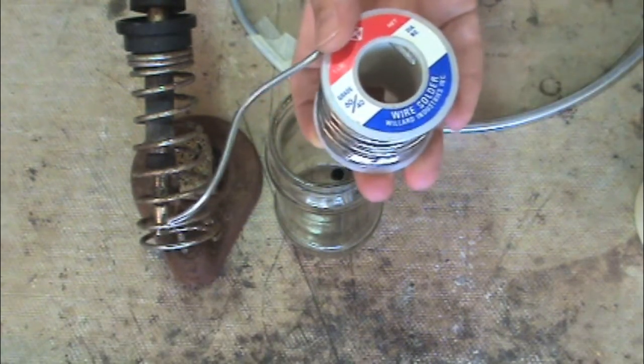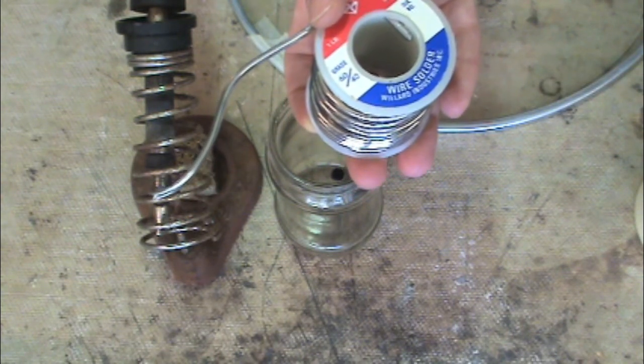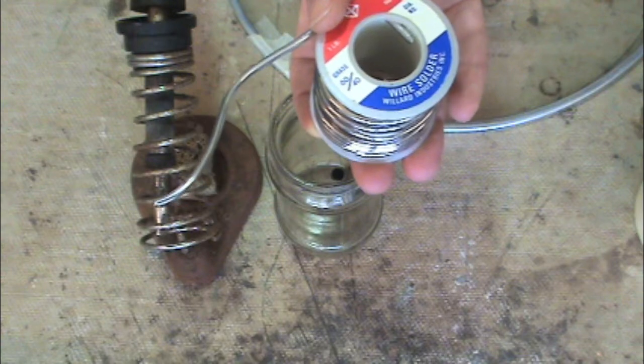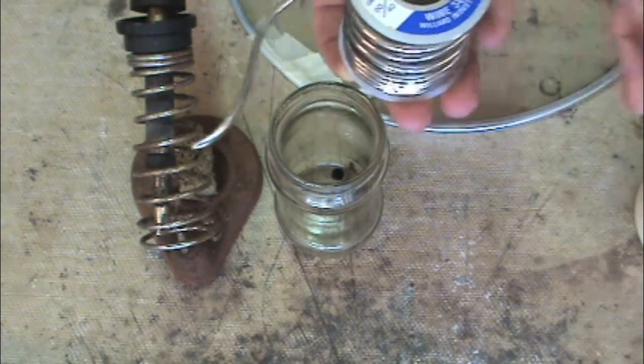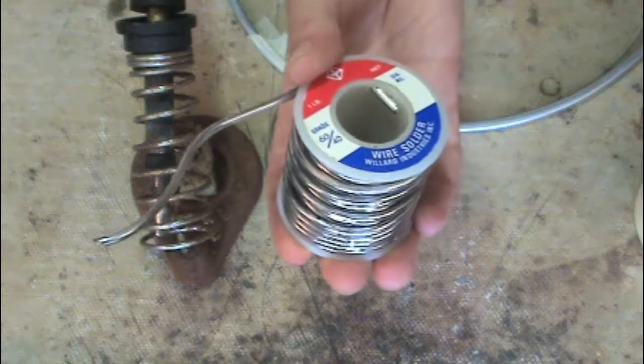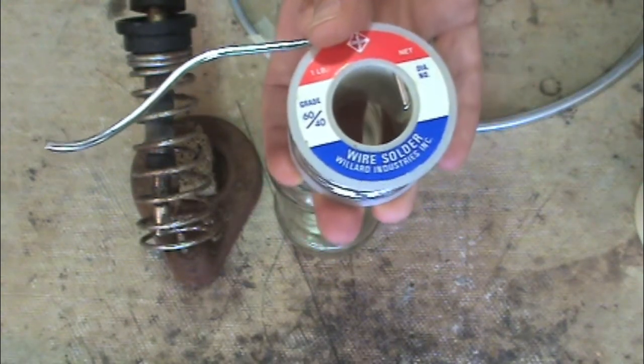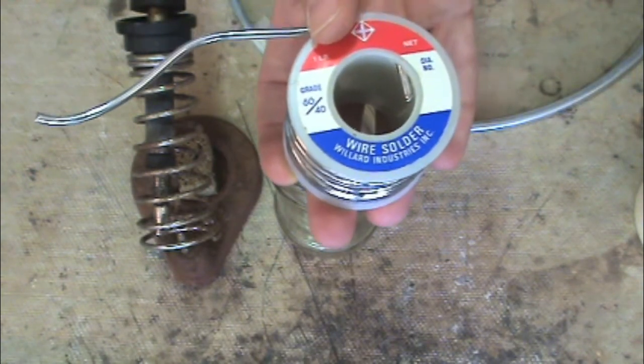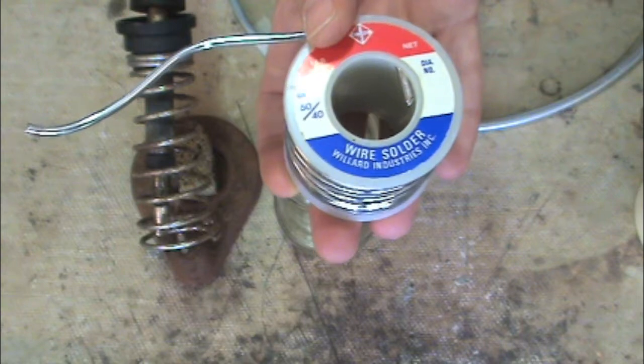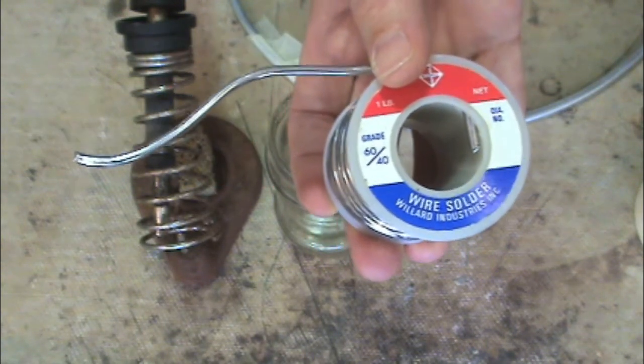So I'm using solder, and this is 60-40 solder. You can use 50-50 as well. It's lead and tin. So the lead is the solder. I think the tin strengthens it up a little bit. Because if you were just going to use 100% lead, it's just going to pull apart. So the tin is going to help it to set up quicker. The 50-50 I think sets up even quicker and it's a little bit stronger. Because this is 60 lead, 40 tin. And 50-50 is obviously even amounts. But I'm using what I have around.